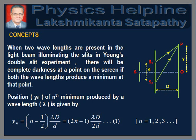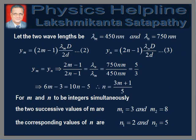We are now in a position to solve the problem using these concepts. The two wavelengths given in the question are lambda_m = 450 nm and lambda_n = 750 nm. Let the mth and nth dark fringes due to lambda_m and lambda_n be formed at positions y_m and y_n, which are given in equations 2 and 3. For complete darkness, y_m and y_n must coincide. Therefore, equating y_m and y_n and simplifying, we get n = (3m + 1) / 5. This condition is satisfied when the values of m are 3 and 8, and the corresponding values of n are 2 and 5.